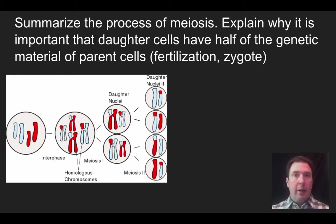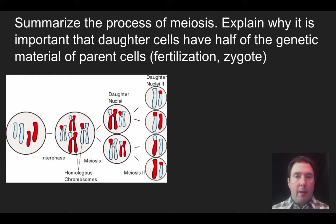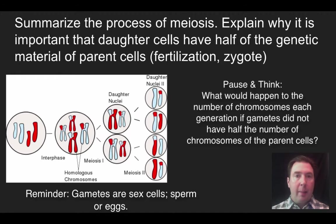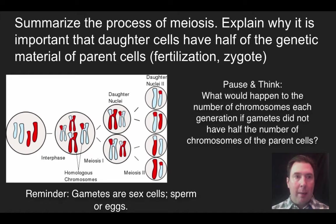So in this particular case, I'm going to summarize the process of meiosis and talk about why it's important for those daughter cells to end up having half the genetic information. Let's start with a brief pause and think: what would happen if we did not reduce the number of chromosomes when making gametes? Why don't you pause and think?